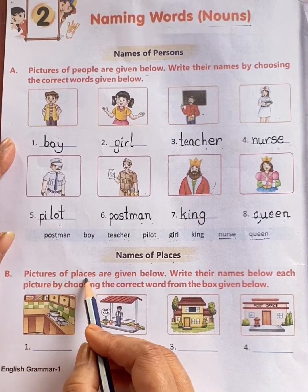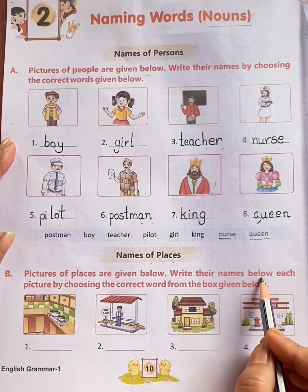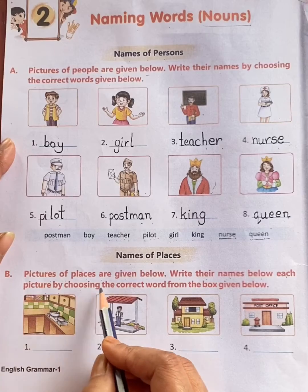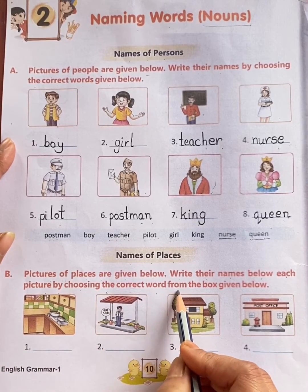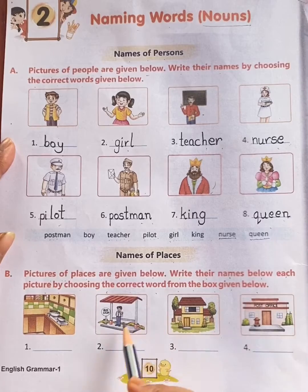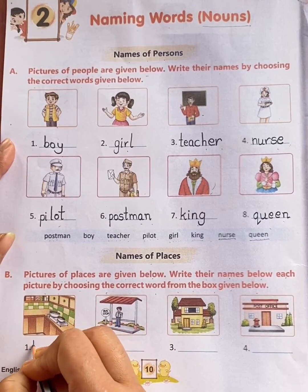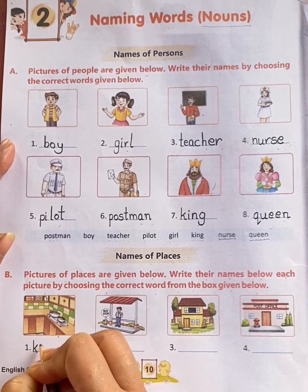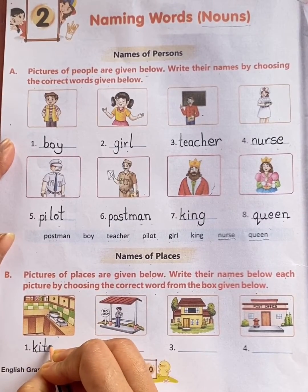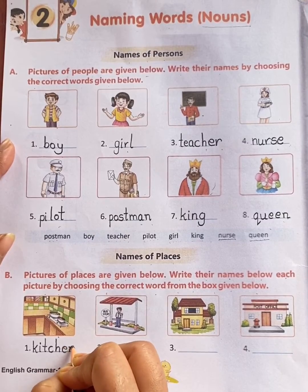Pictures of places are given below. Write their names below each picture by choosing the correct word from the box given below. This is kitchen. The name of the place is kitchen. K-I-T-C-H-E-N, kitchen.